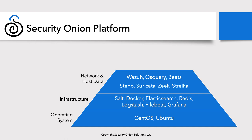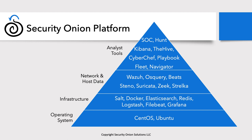Now that we have data generated by our network and host tools, let's look at the analyst tools that allow us to pivot around these different data types and slice and dice them. At the very top we have the Security Onion Console, or SOC — the web interface that allows access to all other tools, including Alerts and Hunt. We also have Elastic Kibana for visualizing data with dashboards, and TheHive for case management. We use SOC Alerts or Hunt to escalate alerts or log data into a case in TheHive.